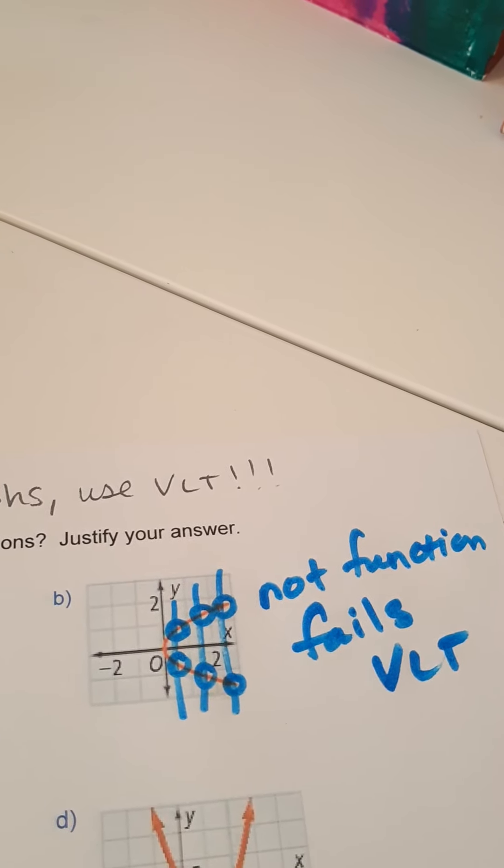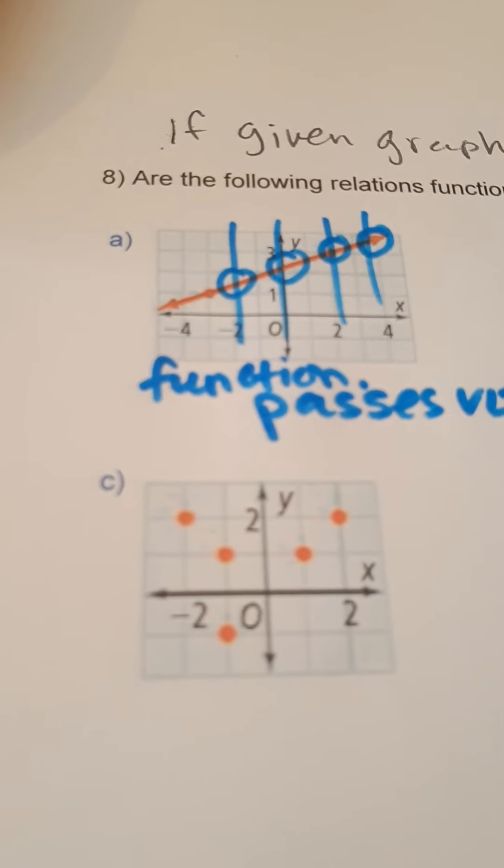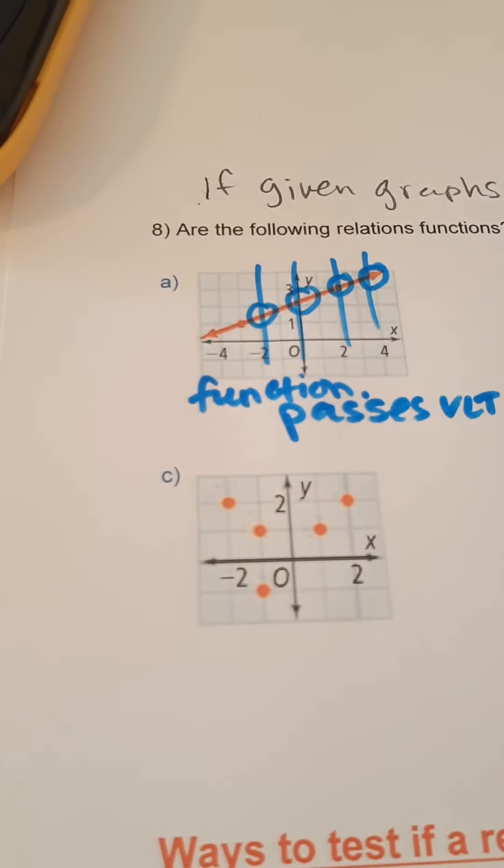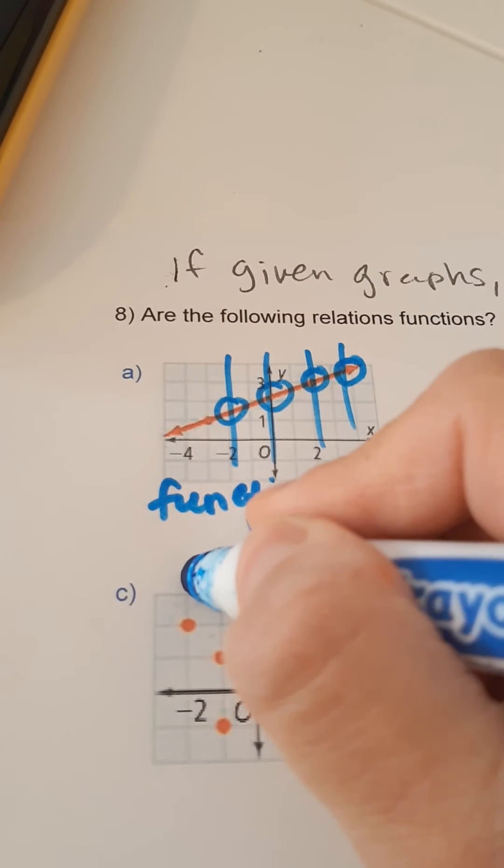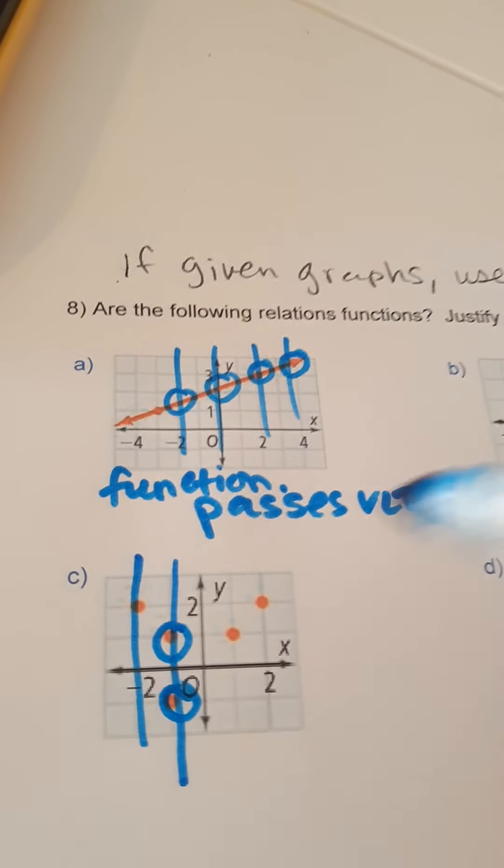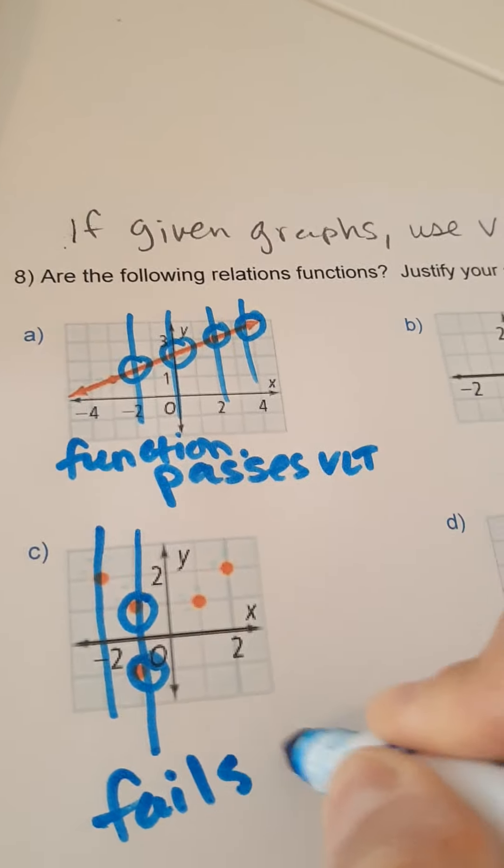Okay. Hopefully, you're getting the hang of it. Here's another set of ordered pairs. Put a vertical line through this guy. Touches once. Put a vertical line through these guys. Oh, yeah. It touches twice. I'm stopping. It fails the VLT.